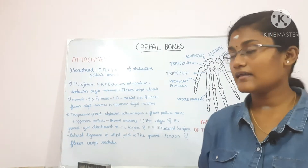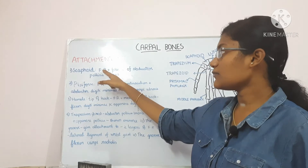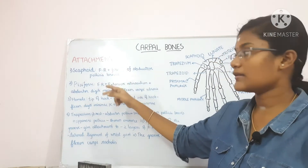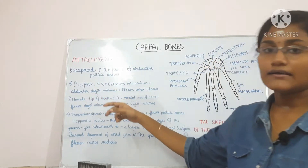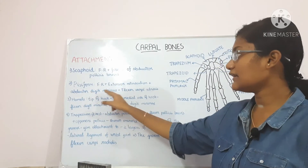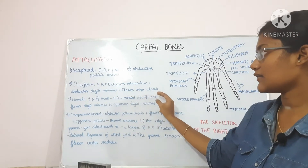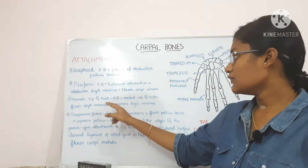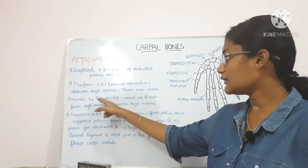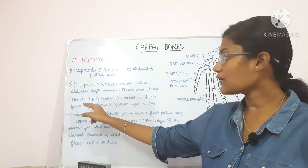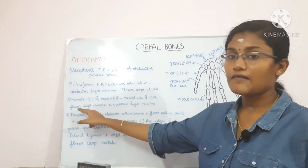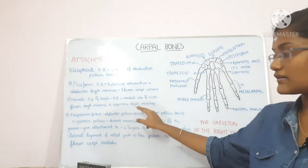The scaphoid gives attachment to the flexor retinaculum and the fibers of the abductor pollicis brevis. The pisiform gives attachment to the flexor retinaculum, extensor retinaculum, abductor digiti minimi and flexor carpi ulnaris. The hamate is divided into the tip of the hook and the medial side of the hook. The tip of the hook gives attachment to the flexor retinaculum and the medial side of the hook gives attachment to the flexor digiti minimi and the opponens digiti minimi.